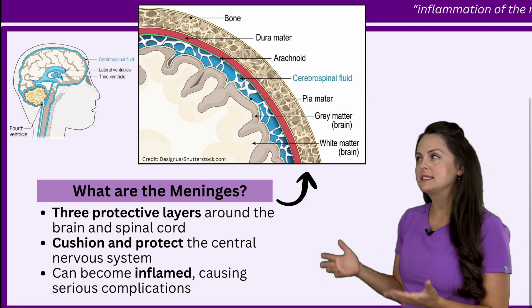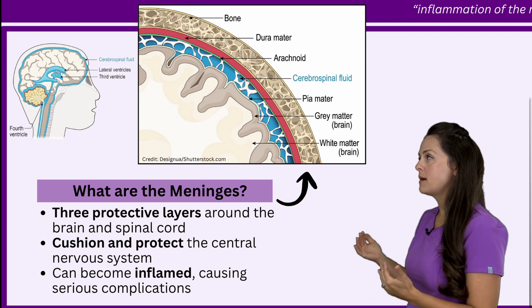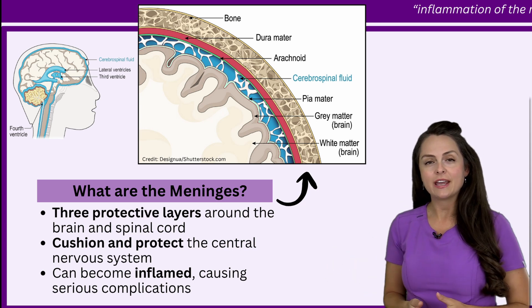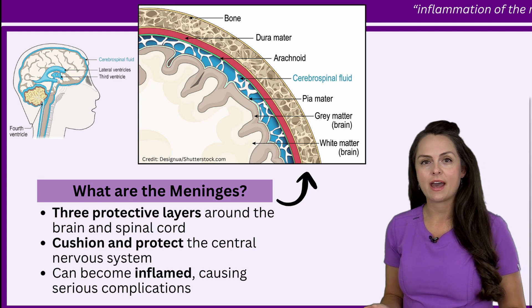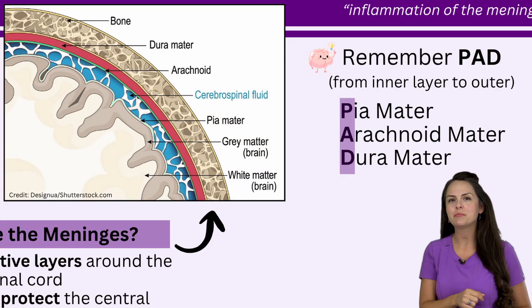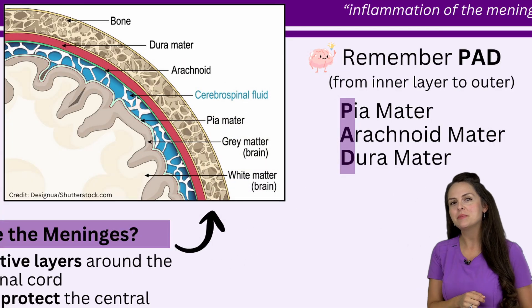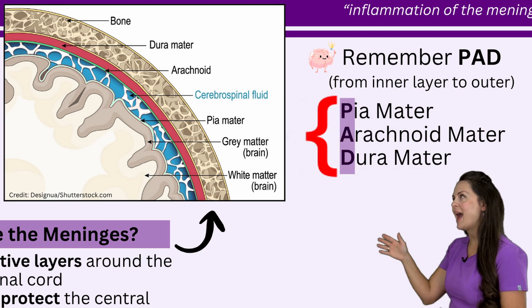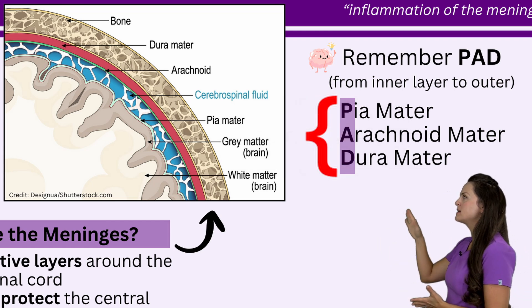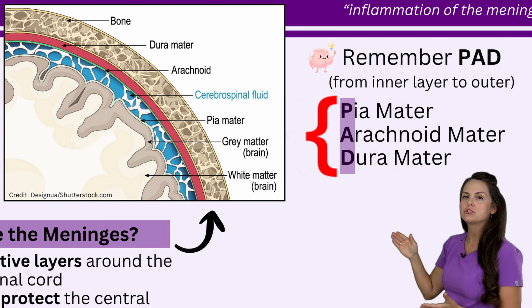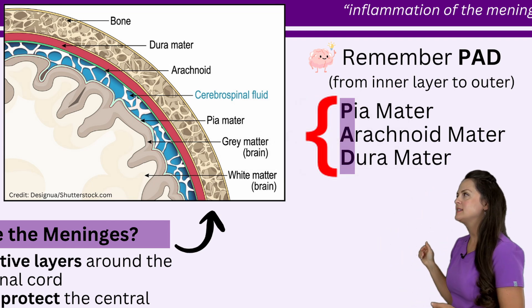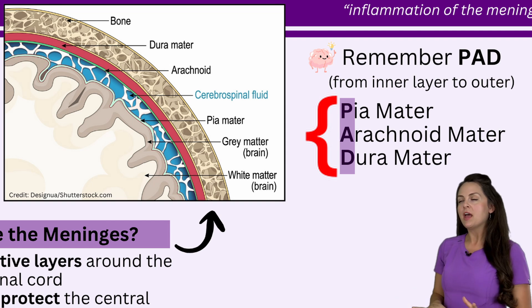Unfortunately, these layers can become inflamed, and whenever they do, they can lead to serious complications that you're going to see in a patient who has meningitis. To help you remember those layers, remember a mnemonic I created called PAD. P starts with the inner layer, and once we get to D, we're talking about the outer layer.